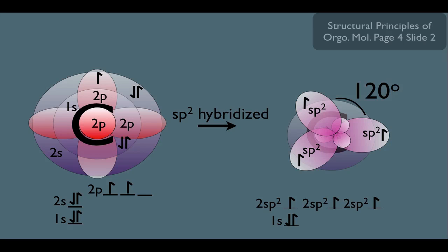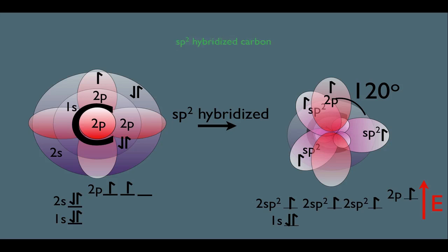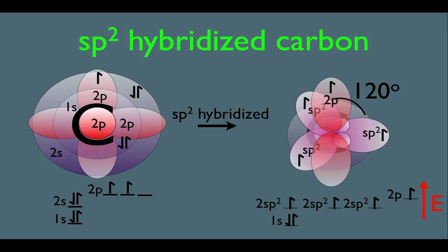However, we're not done here. Remember, we still have the unhybridized p orbital with his electron in it. He would be placed in the electronic configuration below as this right here. Notice again our relative energies here. The unhybridized 2p orbital is higher energy than the three sp² orbitals. We need to memorize this orbital diagram right here. This is the sp² hybridized carbon.